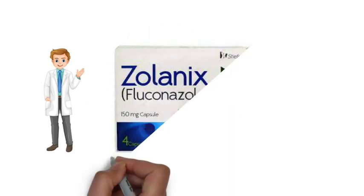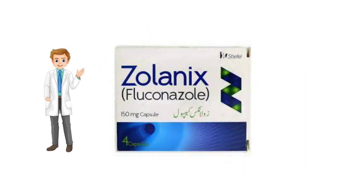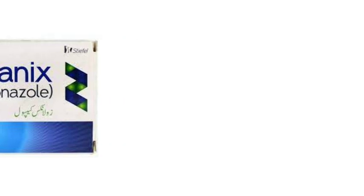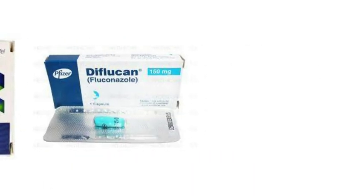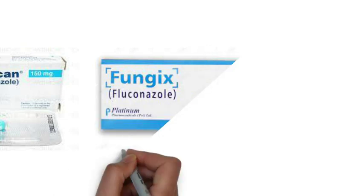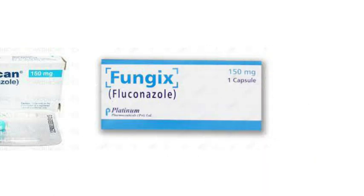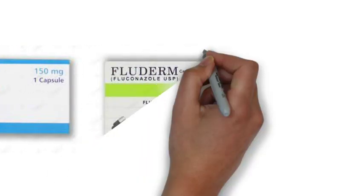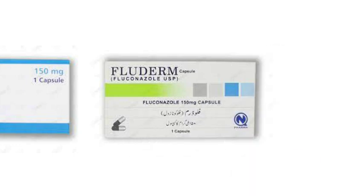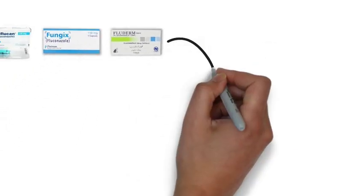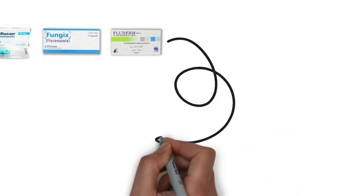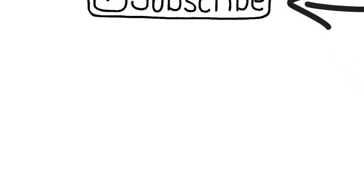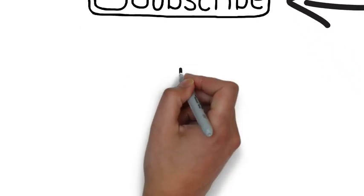Let's talk about brands. The brand names include Zolinix, Diflucan, Fungix, and Fluterm. That's it for now. Thanks for watching. If you found this video helpful, don't forget to press the subscribe button and like the video.